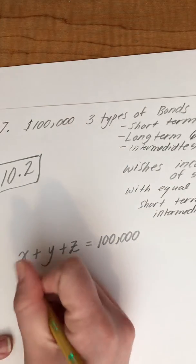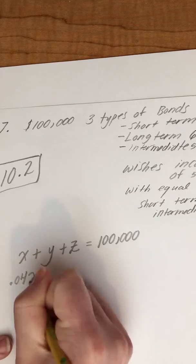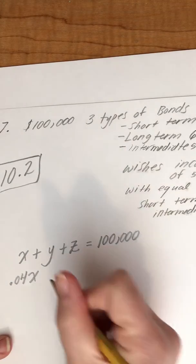So from here, I would type in 0.04X for short-term,